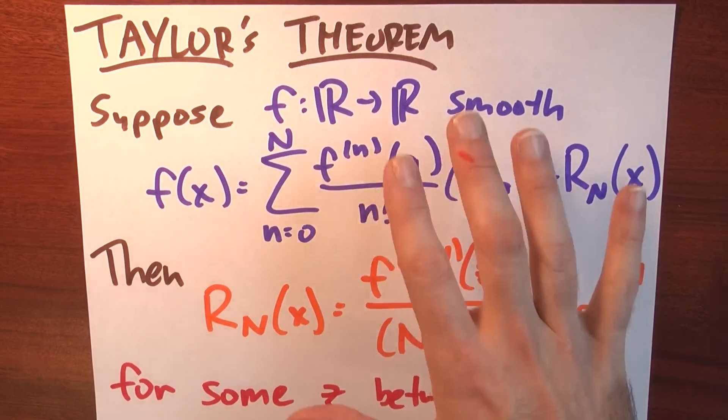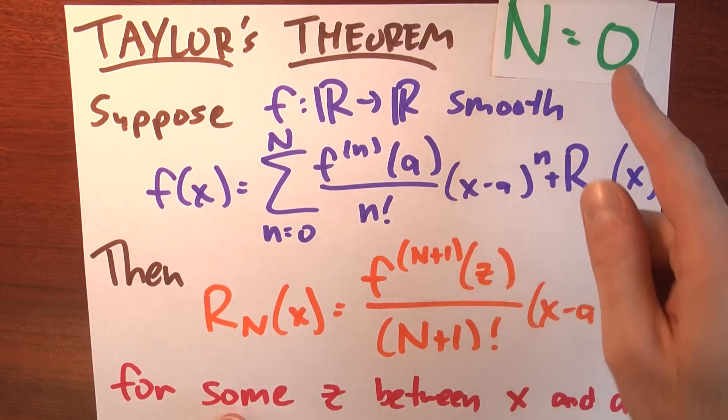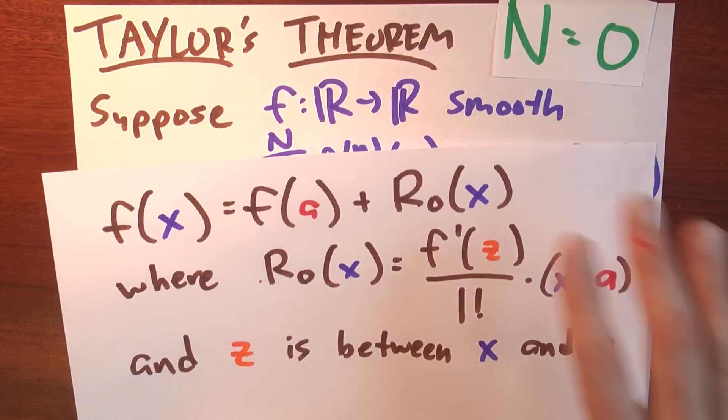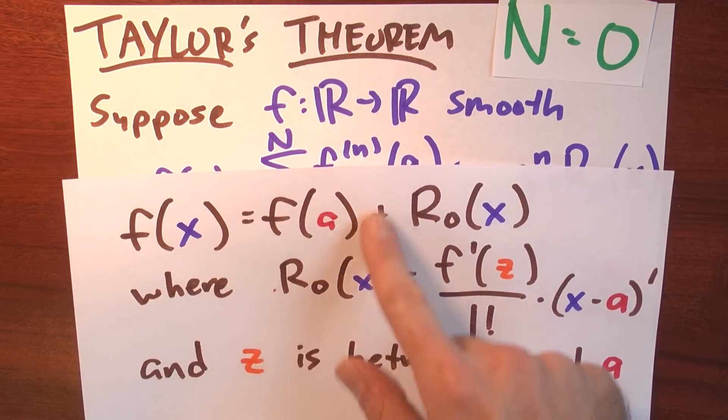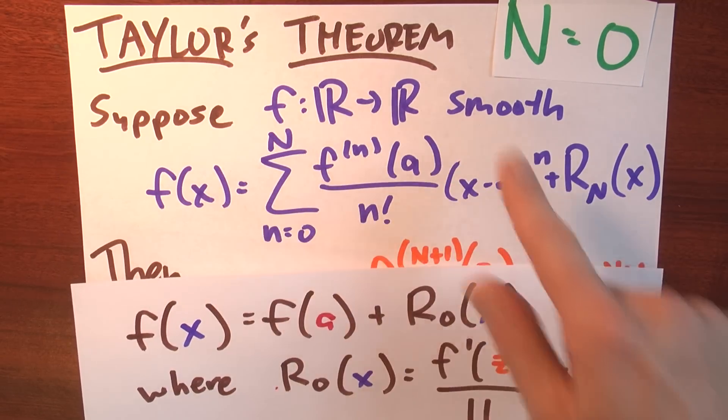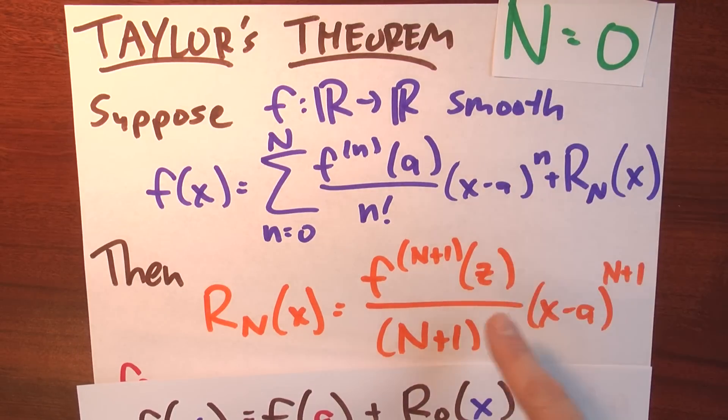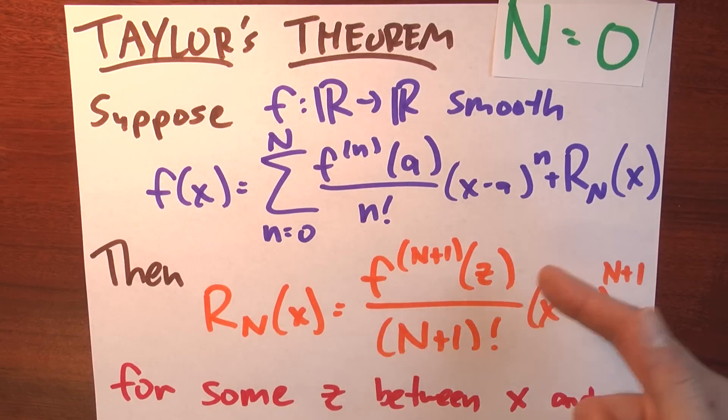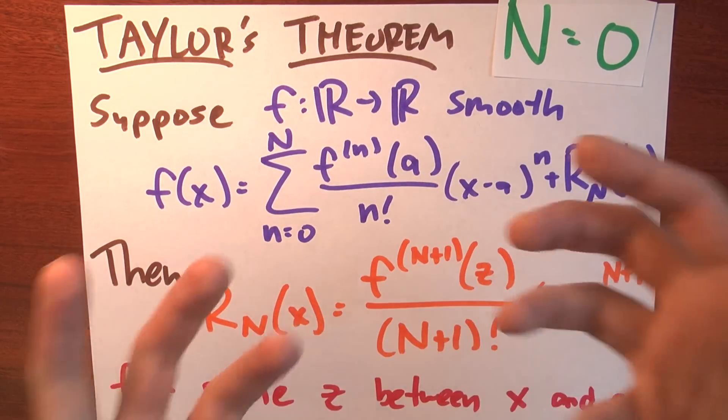And think about what happens here when you plug in big n equals 0. And in that case, what you get is exactly what we had before. It's f of x equals, this is just the n equals 0 term here, plus a remainder term. And that remainder term then, when big n is 0, is exactly the derivative of f at some point z, divided by 1 factorial times x minus a to the first power. It looks exactly like the mean value theorem.